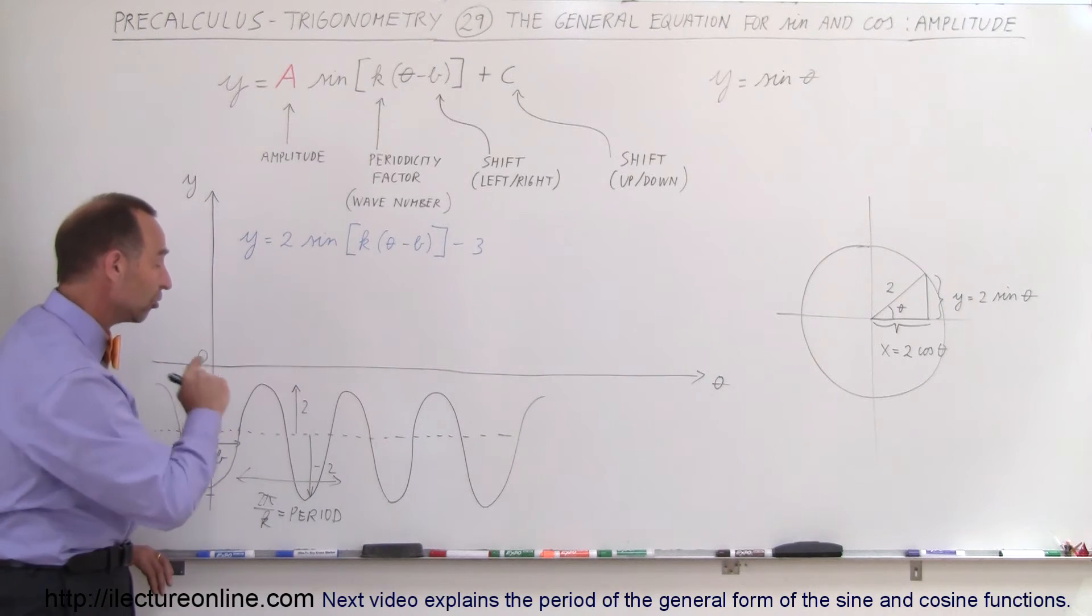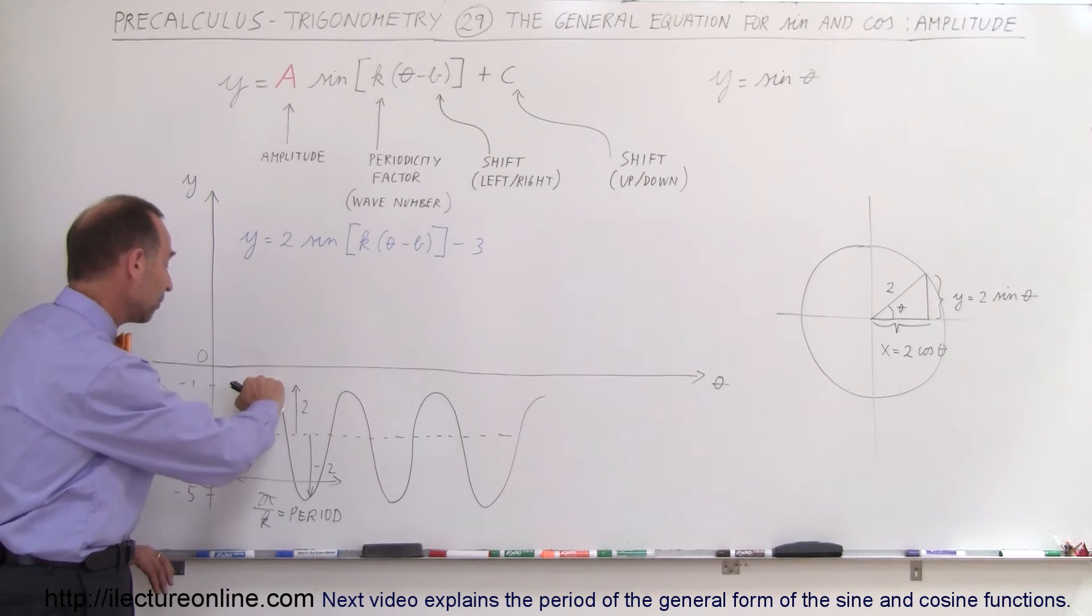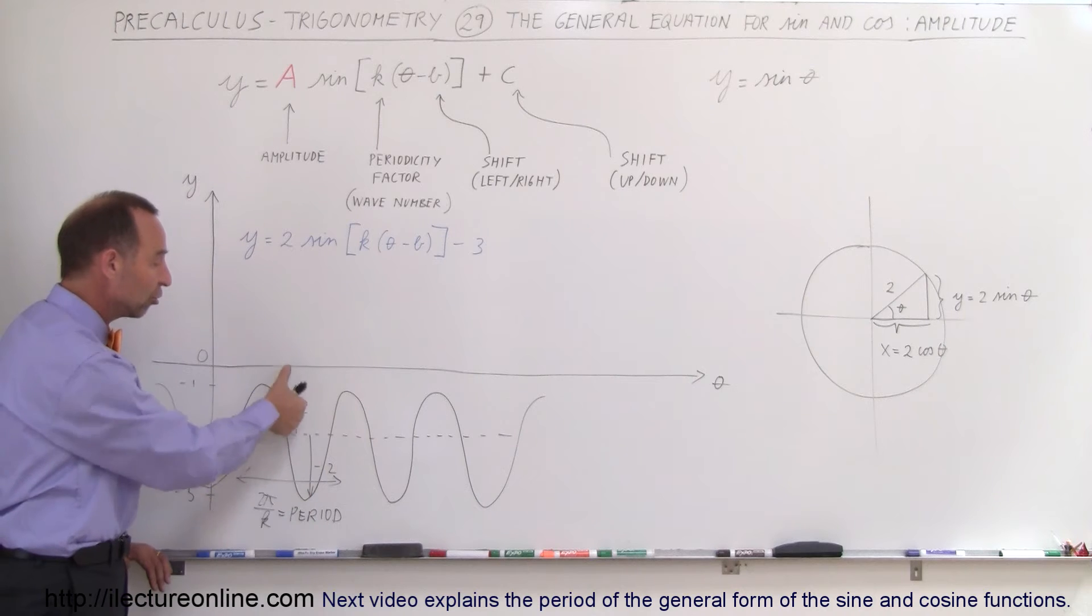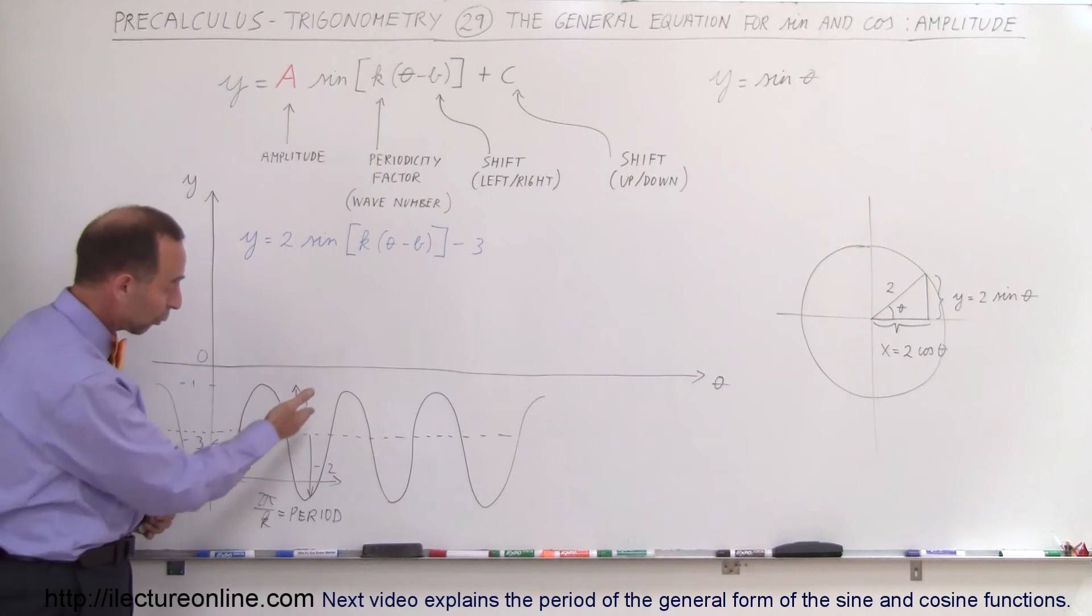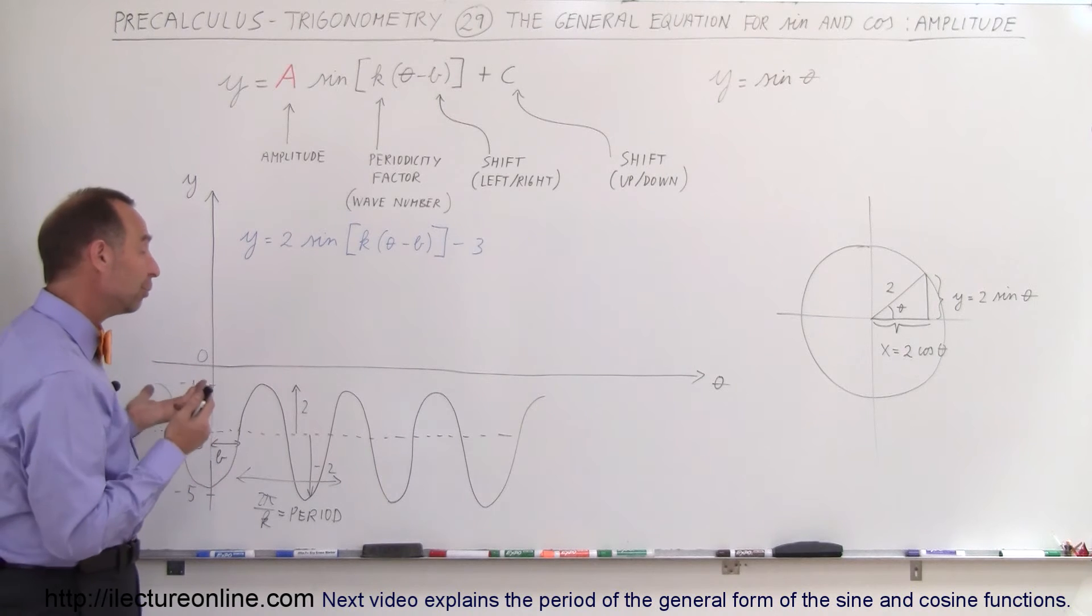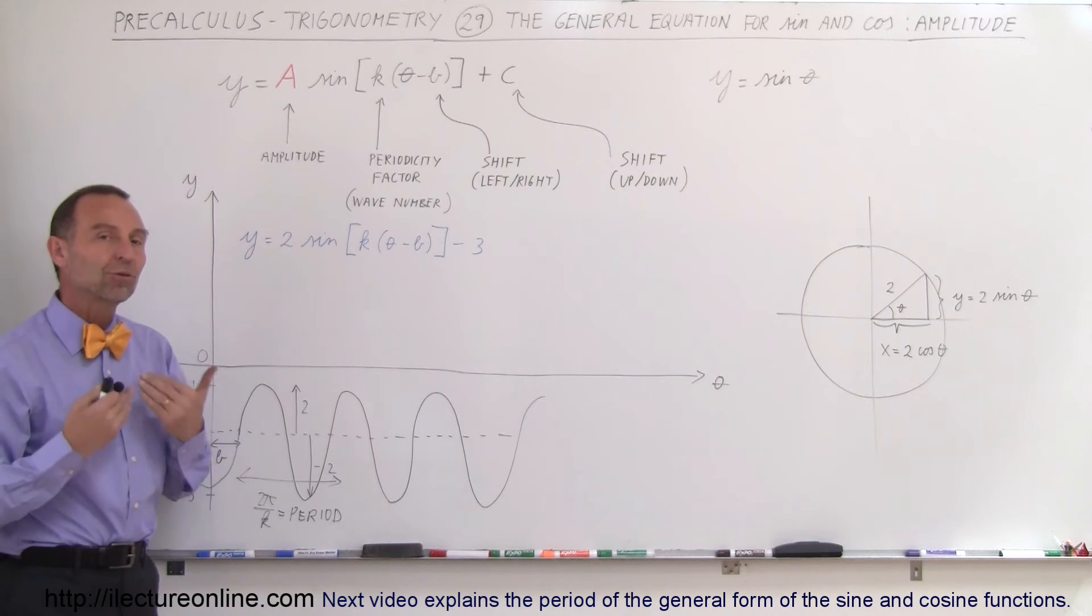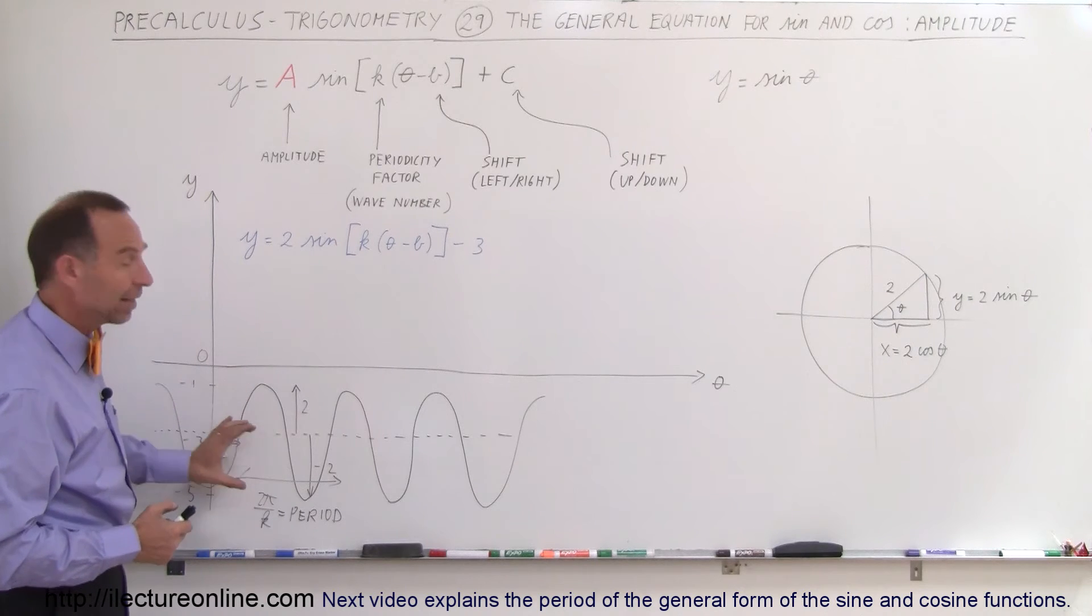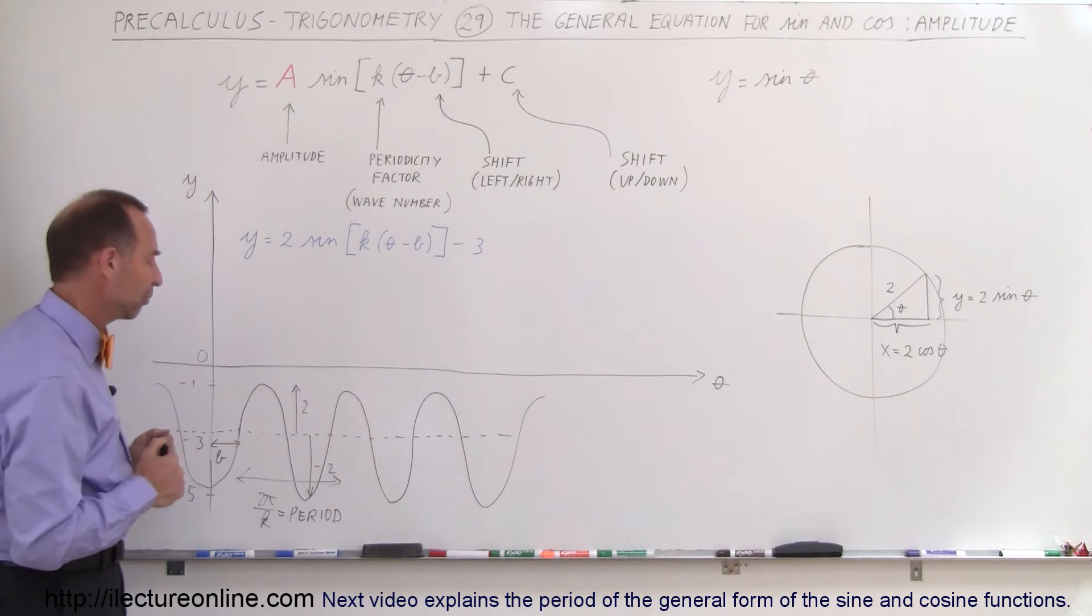And the amplitude is the largest distance from the average value to the peak or the average value down to the bottom here. And you see in each case it's 2 units. In magnitude, of course, it's minus 2 going down and plus 2 going up. The amplitude usually is in absolute value units. So in this case you can see that the amplitude up is 2 and down is 2 as well when we talk about the absolute value.